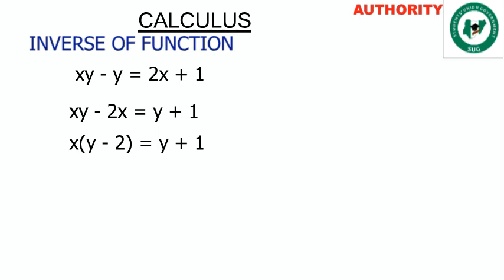Now let's factor out. We have xy minus 2x, let's factor out x. When we factor out x in xy what will remain is y, if we factor out x in 2x what will remain is 2. So we have x open bracket y minus 2 close bracket equals y plus 1.